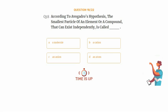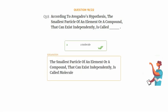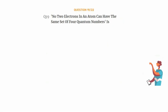The correct answer is Option A: A molecule. The smallest particle of an element or a compound that can exist independently is called a molecule.